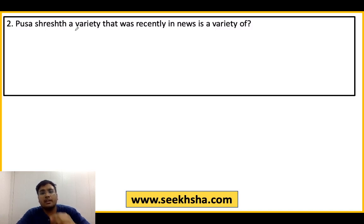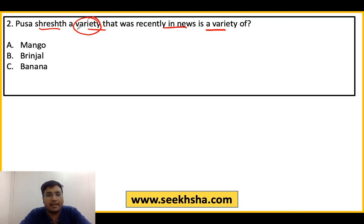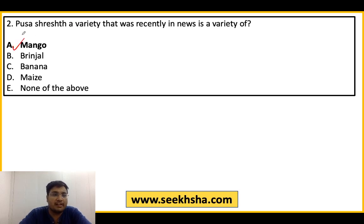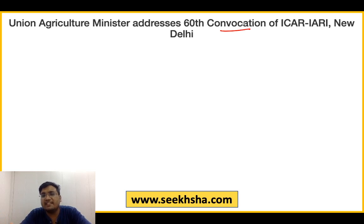The explanation: Pusa Shrest is a variety that was recently in the news — it is a variety of wheat. So Option A will be the right answer for Pusa Shrest. Now, where did this question come from in the news? It came from the ICAR IARI Institute 60th Convocation Ceremony in New Delhi, where degrees were distributed.